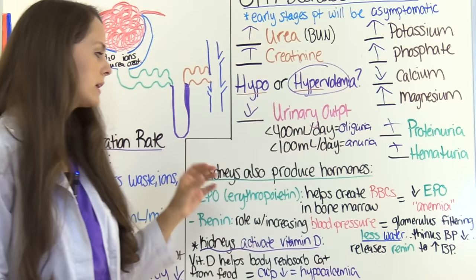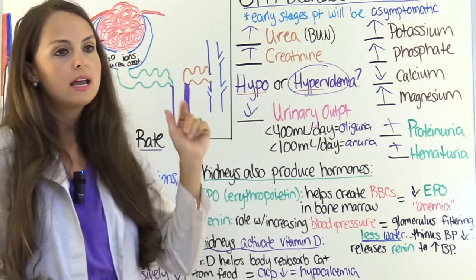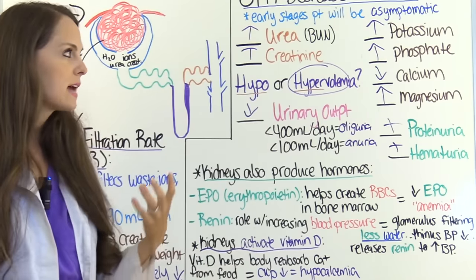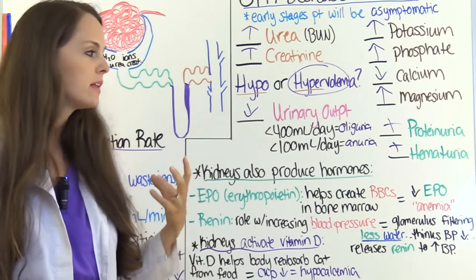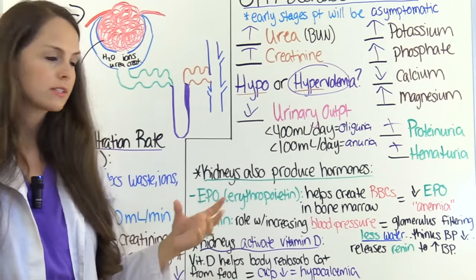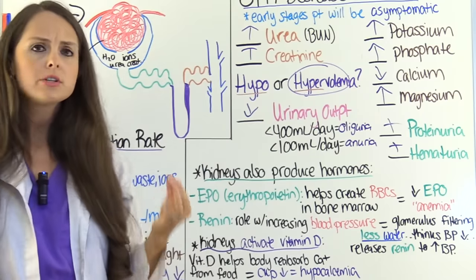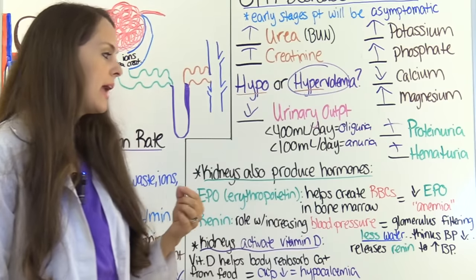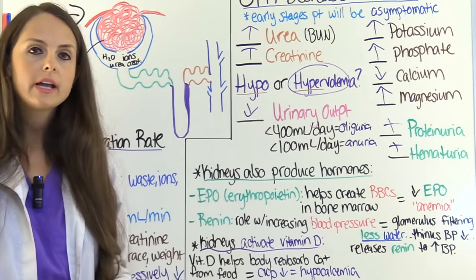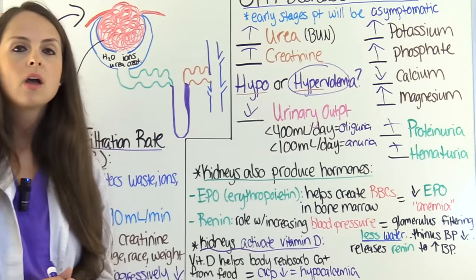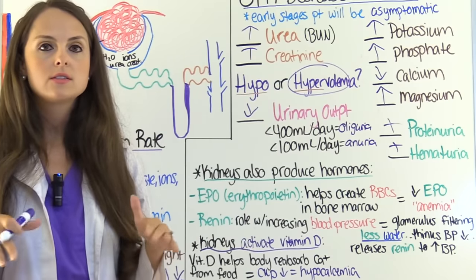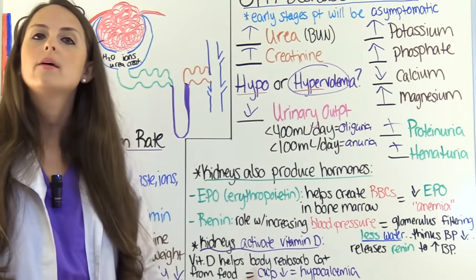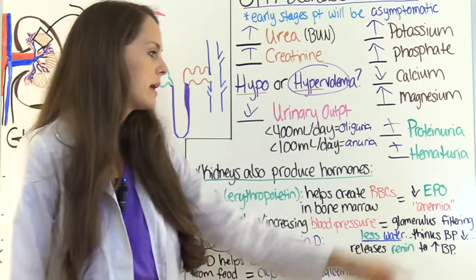The kidneys produce a hormone called EPO — erythropoietin — which helps create red blood cells in the bone marrow. In CKD, EPO is not being produced as it should — it's decreased. So we're not producing red blood cells adequately, putting the patient at risk for anemia.